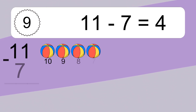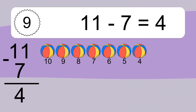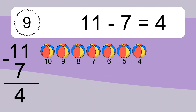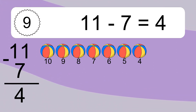11 minus 7 equals 4. Let's count it. 10, 9, 8, 7, 6, 5, 4.